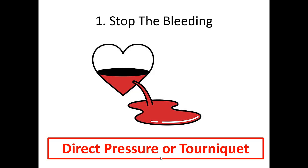Priority number one is to stop the bleeding. 80% of bleeding can be controlled with direct pressure, but please don't be afraid to use a tourniquet. If it's just you and your partner on scene and you've got a million other things to manage and you see pulsatile bleeding or a massive amount of bleeding, throw a tourniquet on there. We know that they're very safe and very effective — they absolutely save lives. These are a basic life support skill, and even police now are carrying them. You can actually save extremities and stop death by using tourniquets.